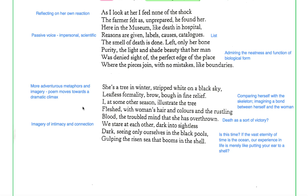Into the final stanza she gets more adventurous again. Now having done that kind of clinical looking at the remains of the body, now she gets more adventurous with it. She's a tree in winter. Well no she's not but yes she is. She's a tree in winter stripped white on a black sky, leafless formality. So comparing a body stripped of flesh to a tree stripped of its leaves. Stripped white because the skeleton is white on a black sky, leafless formality. Brow, bow in fine relief, as in the boughs of a tree. So she's just developing this tree metaphor here comparing her to a tree. Why? Well trees are beautiful, trees are dignified. So she's dignifying this woman as she moves this poem towards a dramatic climax I've suggested here.